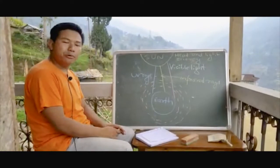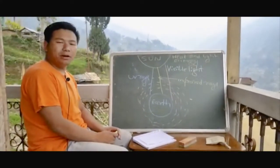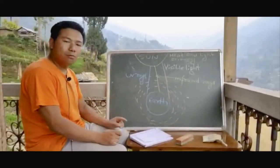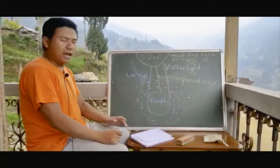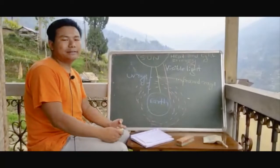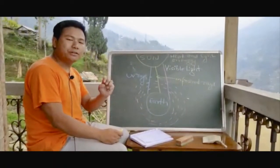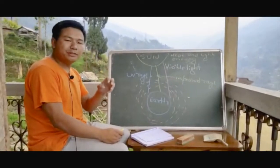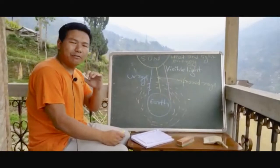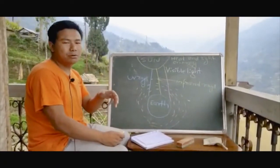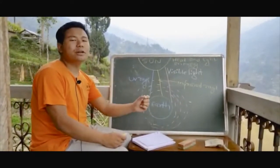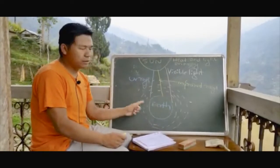Hello everyone, welcome to the Learn From Home program. We have been learning about the first chapter of physical science, concerned about the environment. Today's topic is global warming and the greenhouse gas effect. Have you ever wondered why Earth is a unique planet among the eight planets? It is because Earth has a unique feature — a stable temperature — whereas the other seven planets are either very hot or very cold, making life impossible. That's why Earth is a unique planet. Earth is covered with a blanket of air called the atmosphere.